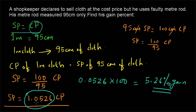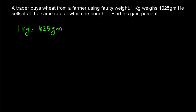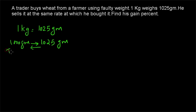Now let's go to example 2. A trader buys wheat from a farmer using a faulty weight — his 1 kilogram weight actually weighs 1025 grams. He sells it at the same rate at which he bought it. Find his gain percentage. When the trader goes to the farmer, he uses this faulty weight, so instead of receiving 1000 grams he actually receives 1025 grams of wheat.